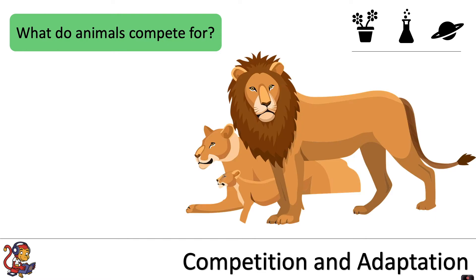Can you think of four things that animals might compete for? The four main things are food, water, space, and mates. This competition could be within the same species — for example, lions competing with other lions for food, water, space, and mates. For some resources like food, water, and space, animals could also be competing with other species, such as lions competing with hyenas.